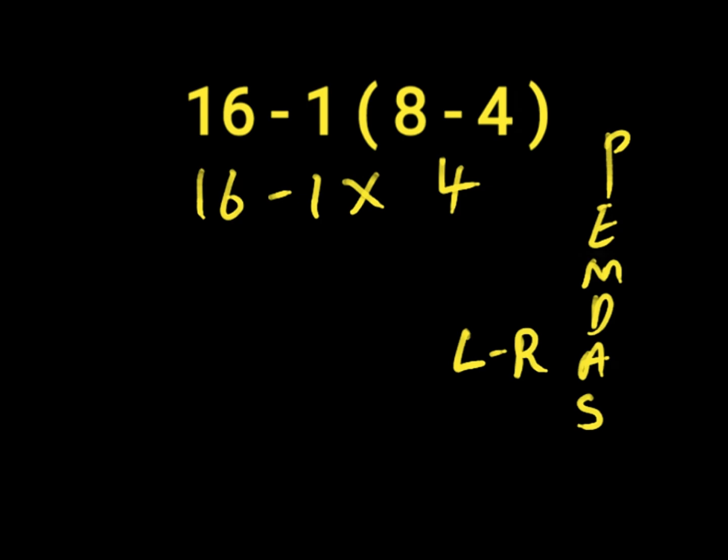So in this expression, we have a subtraction and a multiplication. We first work with our multiplication because it comes before subtraction. One times 4 will give us 4. Then we have 16 minus 4. 16 minus 4 will give us 12.